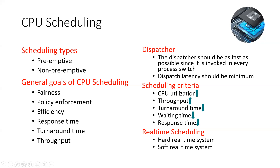Throughput — not time, but throughput — means how many processes are executed by the CPU in one unit of time. How many processes executed under one unit of time is called throughput. What is the waiting time? When a process in the waiting state or blocked state has waited, and it has not been assigned to the processor, how many times it waited is the waiting time. We will learn how to calculate wait time, turnaround time, and throughput in the next session.